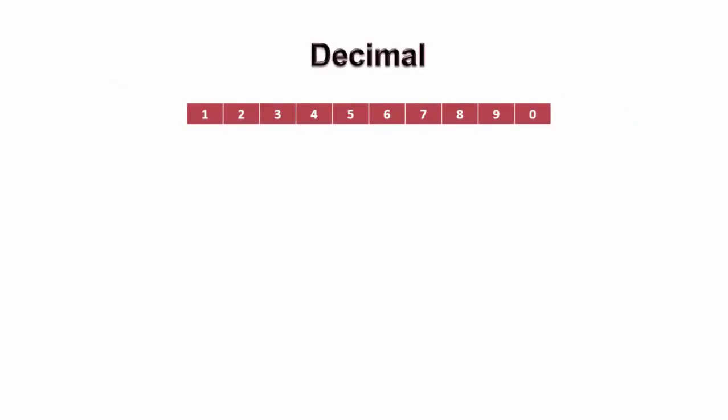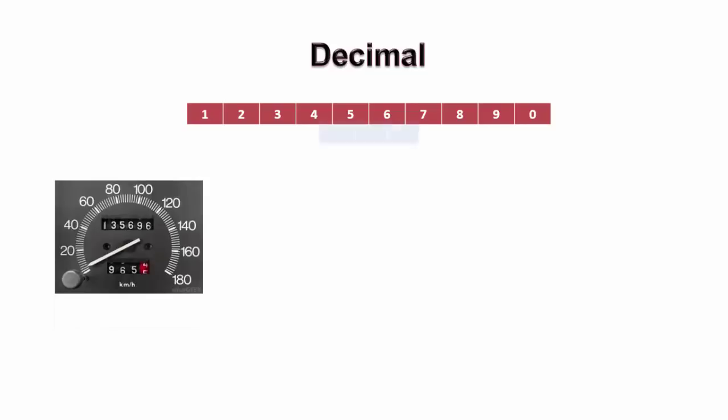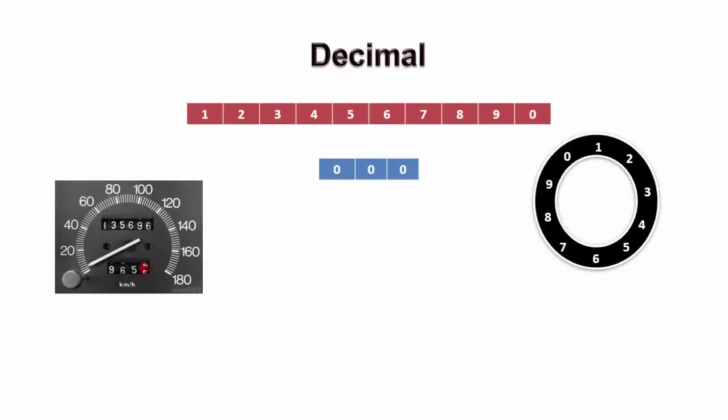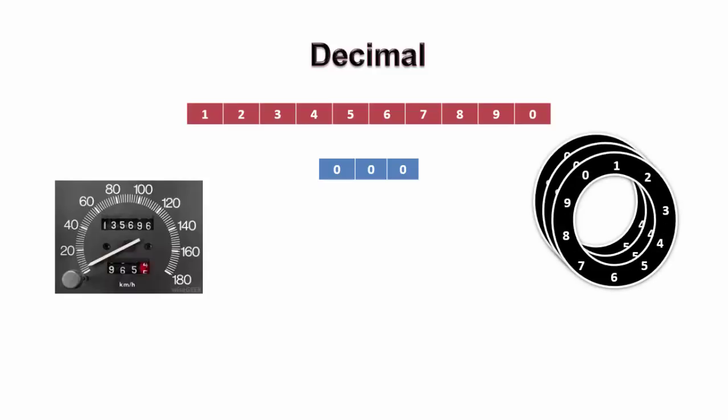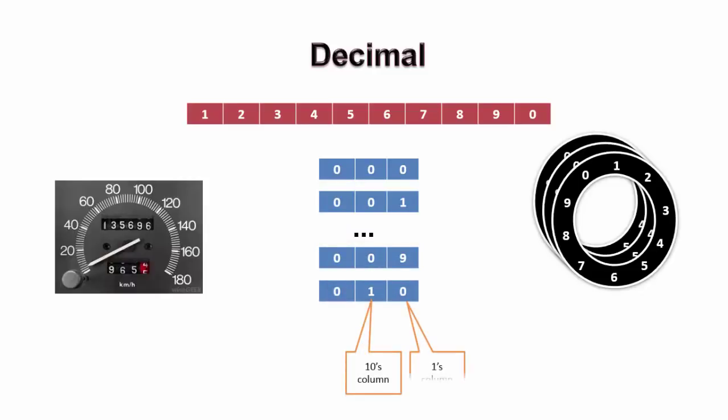The decimal number system consists of 10 digits. Let us understand the working of kilometer reading device in a car. It is basically a ring with 10 digits. Such multiple rings work together to form a number. When the car travels, the digits increment from 0 to 9. After that, it has to go back to 0. At this time, adjacent ring is incremented. Every digit has a positional value.